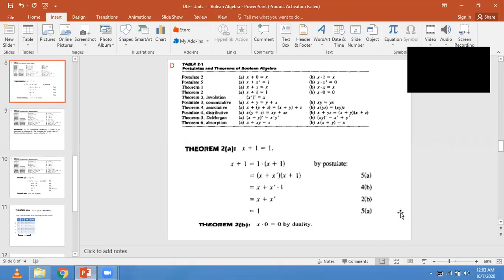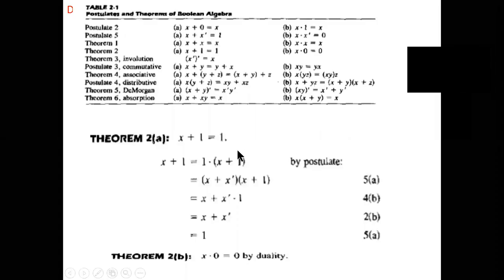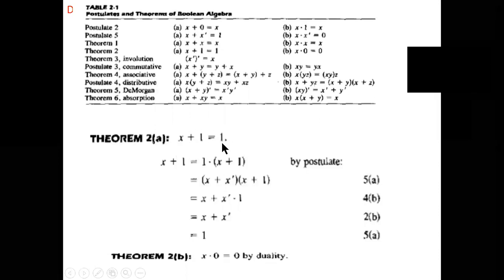Hello students. Last class we discussed the Boolean algebra postulates and theorems. In this section we are going to see some more theorems. Consider x plus 1 equal to 1. We have to prove how x plus 1 equals 1.